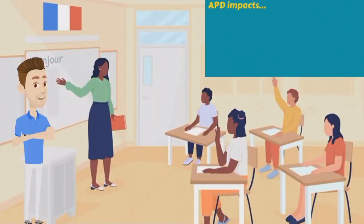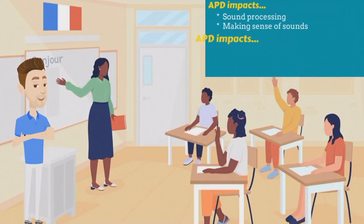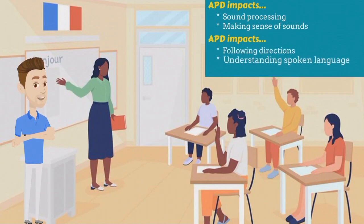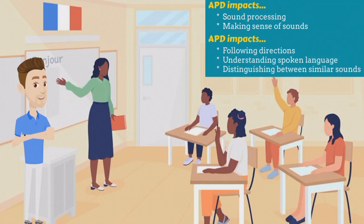Auditory Processing Disorder is a learning disability that affects a student's ability to process and make sense of sounds they hear. People with APD may struggle with following directions, understanding spoken language and distinguishing between similar sounds.